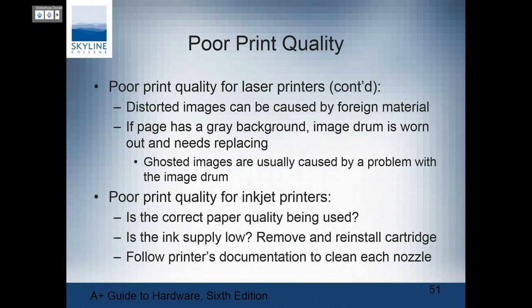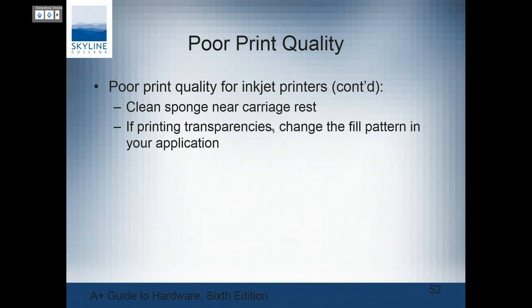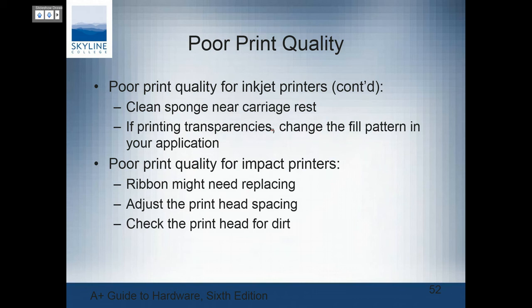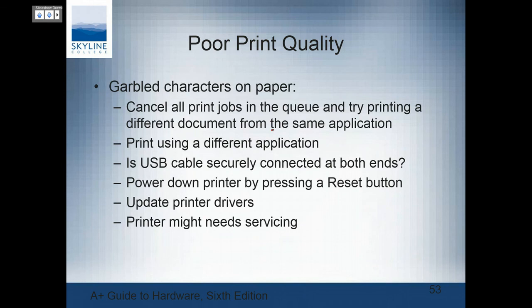The laser drum might need replacing. If you get a shadow on the page, it means the drum is not getting cleaned properly — excess toner is not being removed. That can also expose other people's documents, which you don't want. Background image means the drum is worn. A ghosted image is caused by a problem with the image drum or the cleaning process. Distorted images can be caused by foreign matter on the drum. A line on the side of the page means toner is not getting removed from it.